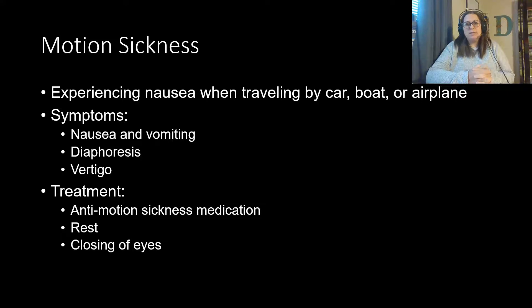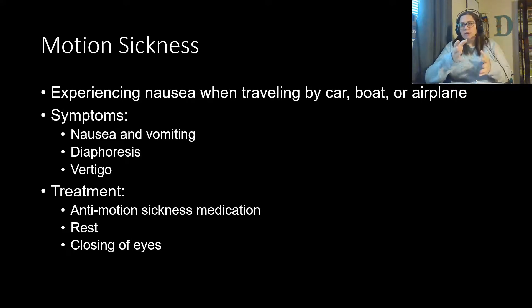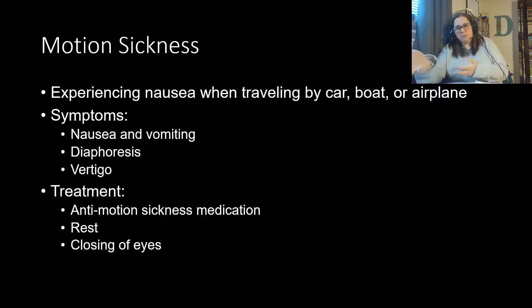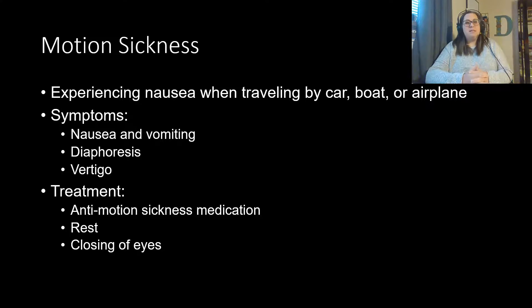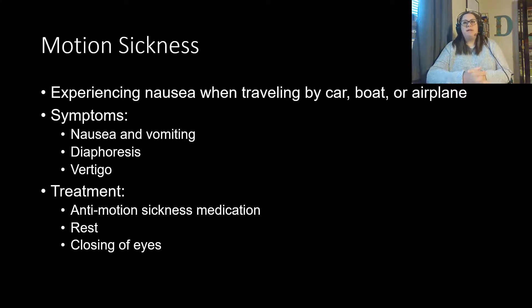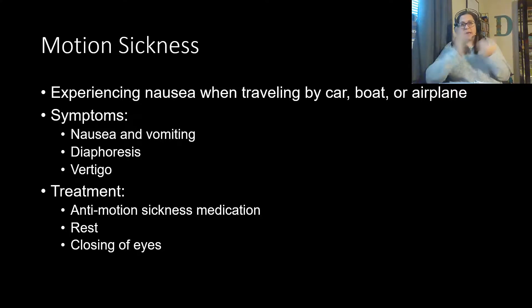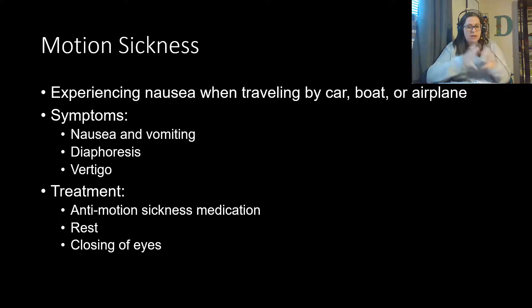Motion sickness occurs when traveling in a car, boat, or airplane due to a mismatch between visual input and the body's sense of movement. Symptoms include nausea, vomiting, diaphoresis (sweating), and vertigo. Treatments include anti-motion sickness medications like Dramamine, acupressure bracelets, rest, and closing the eyes — though for some patients, closing the eyes makes it worse.